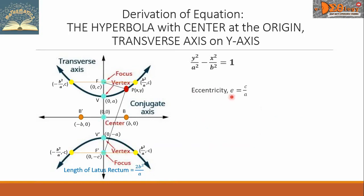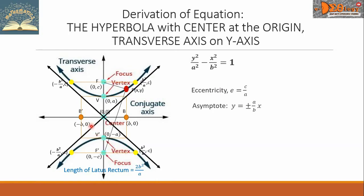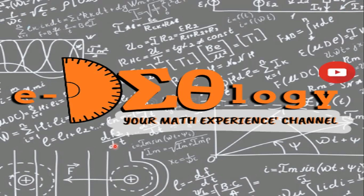For the eccentricity, denoted by e, this equals C over A. Now, the asymptotes: there are two asymptotes with equations y = ±(A/B)x. We draw the asymptotes by constructing a rectangle whose sides are parallel to the coordinate axes and passing through the vertices and the endpoints of the conjugate axis. The asymptotes are the extensions of the diagonals of this rectangle. I hope you learned something from this video. See you again next time.